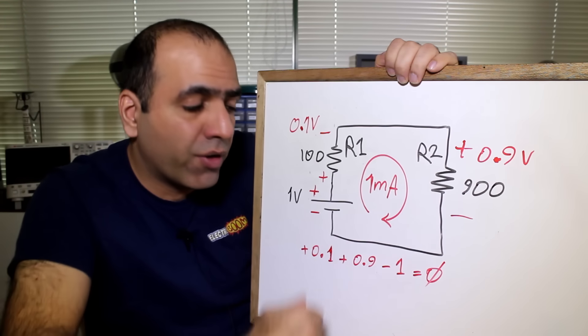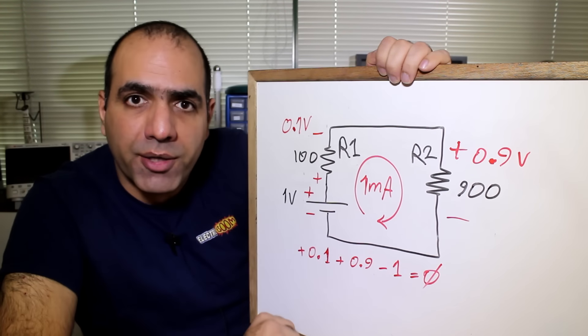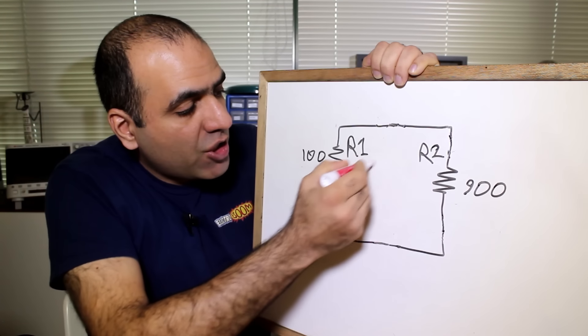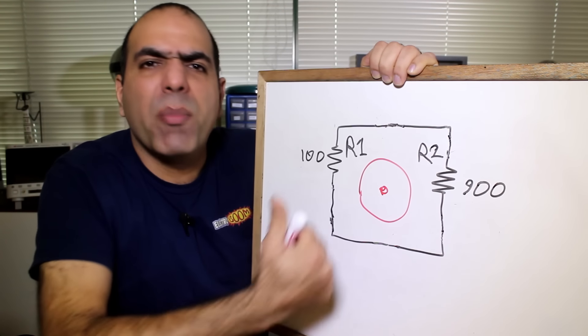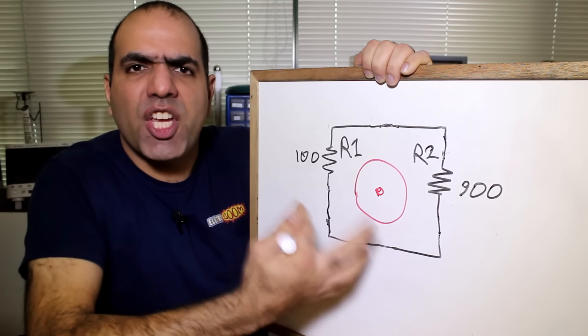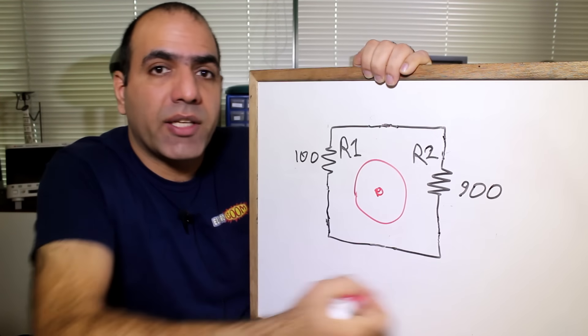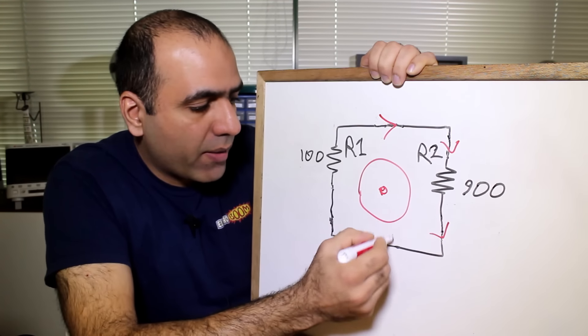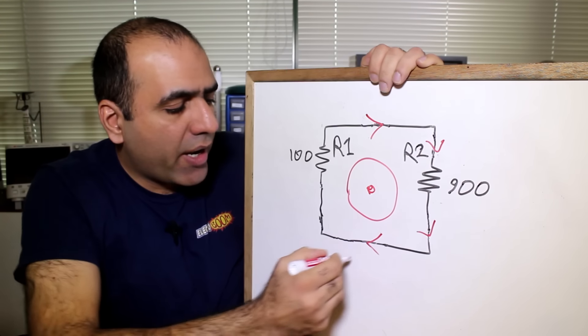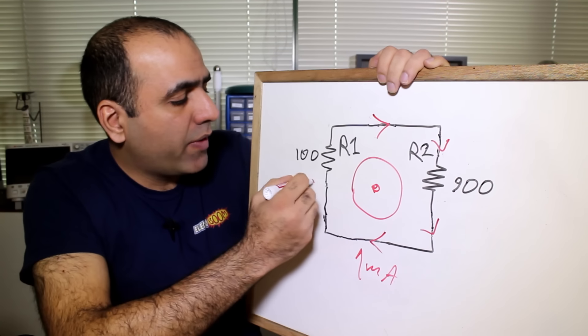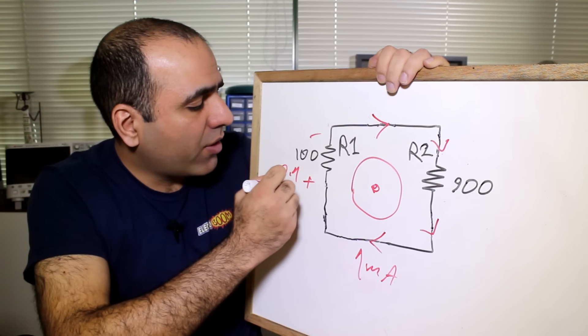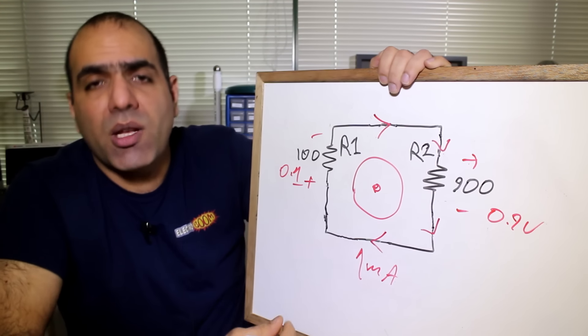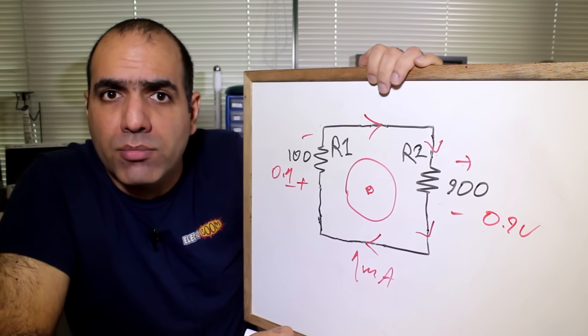But let's remove the supply and short it and instead apply a changing magnetic field through the loop coming out of the page. We know that a changing magnetic field creates current in a loop. And according to the Lenz law, the direction of the current is this way. Let's say at a moment in time the current reaches 1 milliamp, which means we will have 0.1 volt across R1 and 0.9 volts across R2. The sum of the voltages in the loop is not zero.